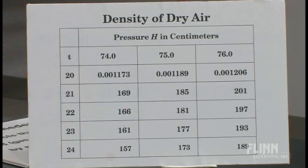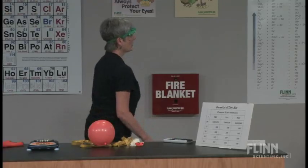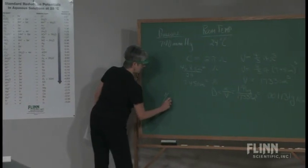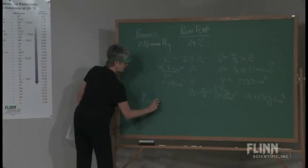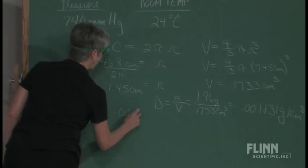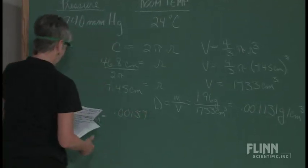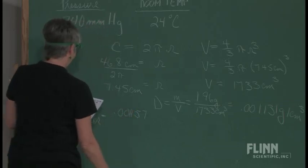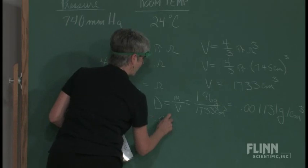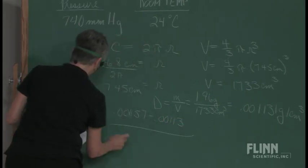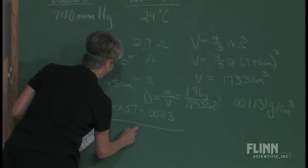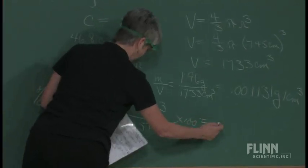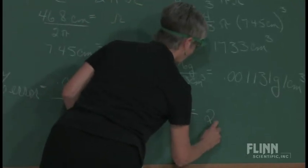The percent error is: (0.001157 − 0.001131) ÷ 0.001157 × 100, which gives approximately 2.3%.